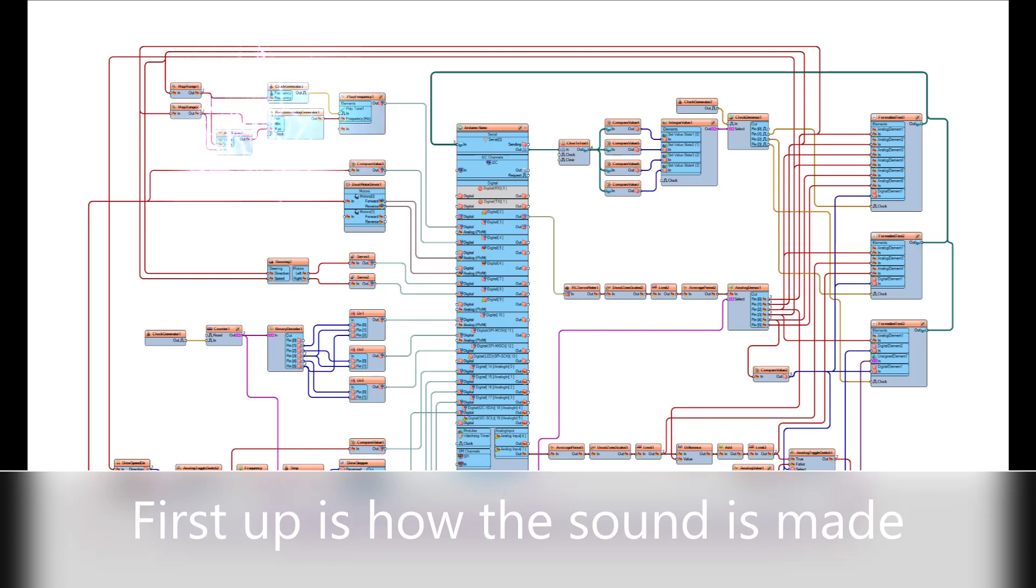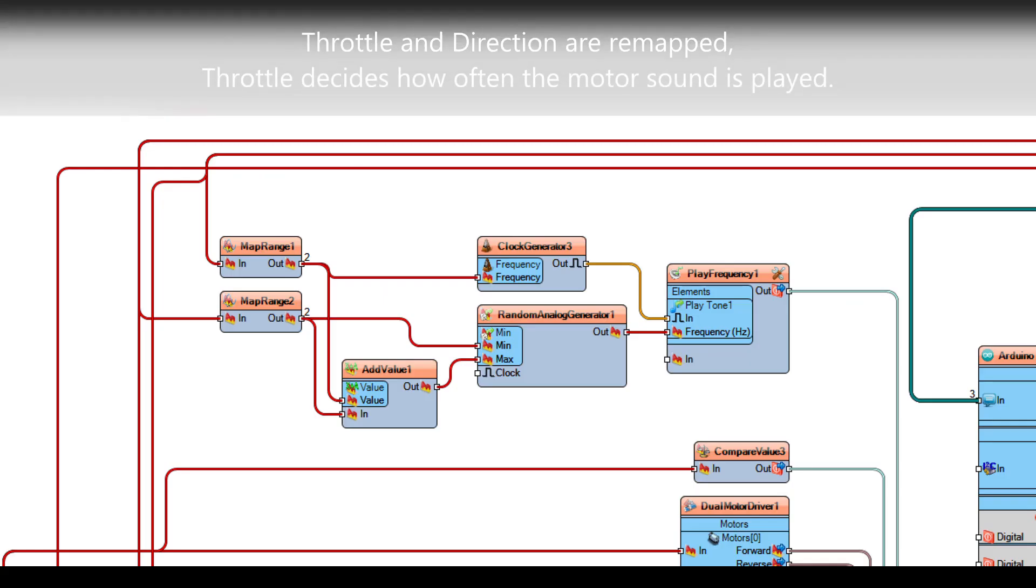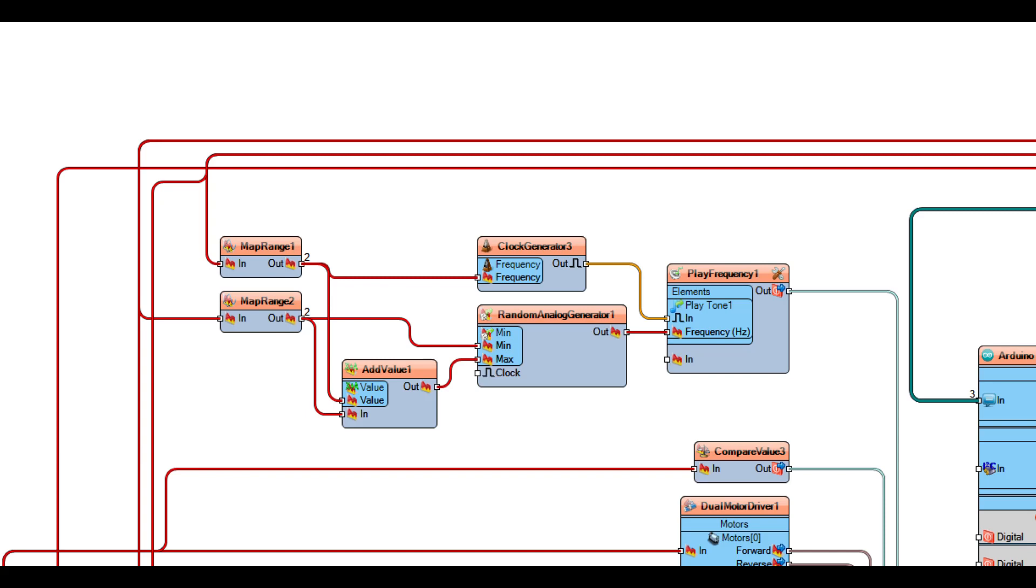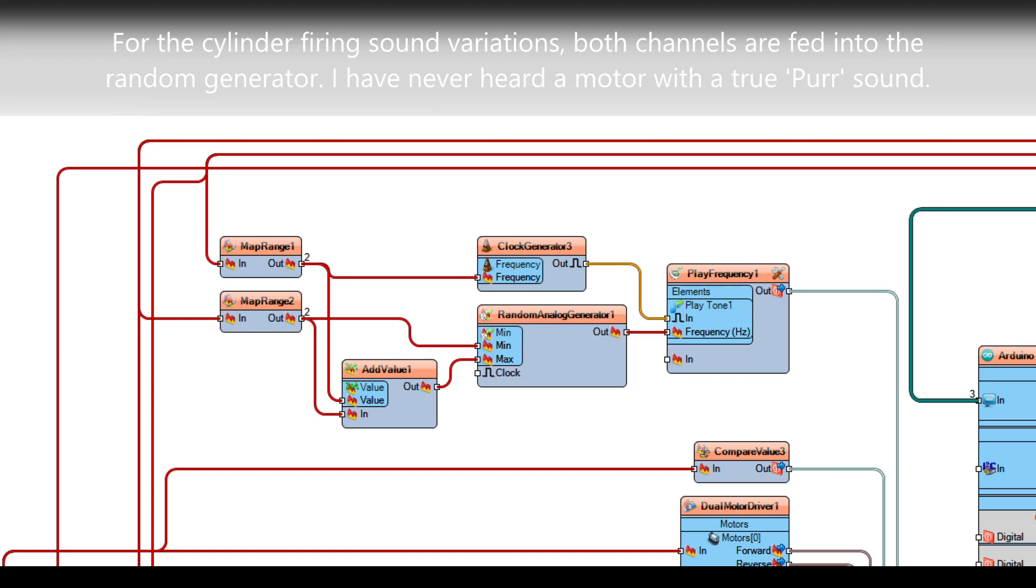The first part we're going to look at is the sound. The two inputs coming in are throttle and steering. The throttle directly runs the clock generator, remapped to a 30 to 70 range, and that tells it how fast to actually play the sound when you move the throttle stick up and down. Both channels are added after being mapped and sent to a random analog generator. This random analog generator gives the sound a little bit of variance in the frequency, like when a motor is idling it doesn't idle at the same sound every cylinder. This gives it a little bit of difference in the sound.